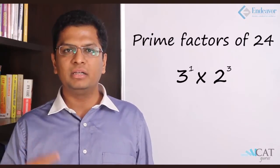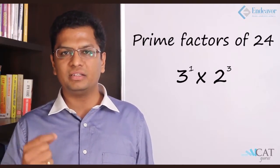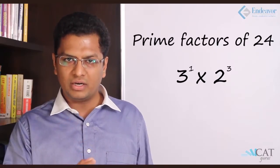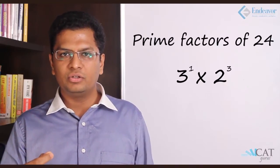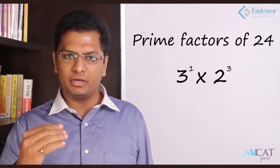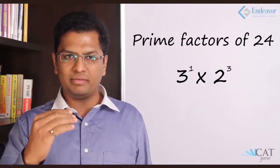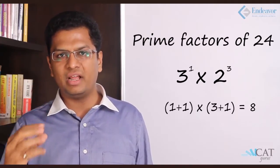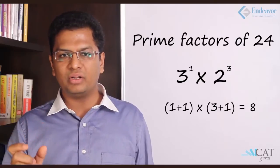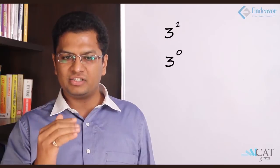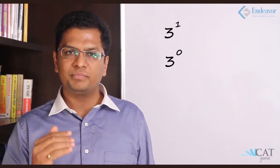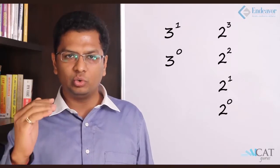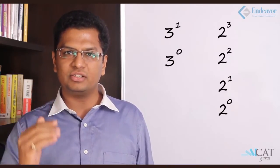Let's break down 24 into prime factors. 24 is nothing but 3 × 2³, so that gives me 3¹ × 2³. If I add 1 to every power: 3 to the power 1 means I add 1 to 1, which is 2; 2 to the power 3, I add 1 to 3, which is 4. So 3 to the power 1 and 3 to the power 0 — these are 2 factors. 2 to the power 3, 2 to the power 2, 2 to the power 1 and 2 to the power 0 — these are 4 factors.